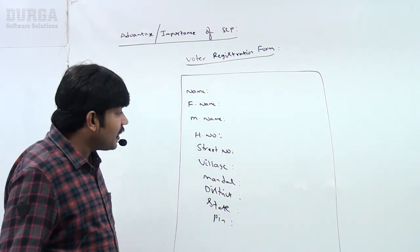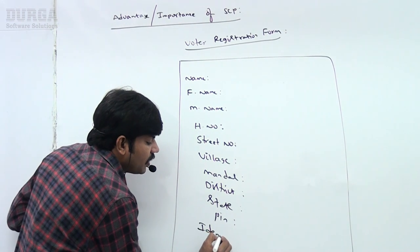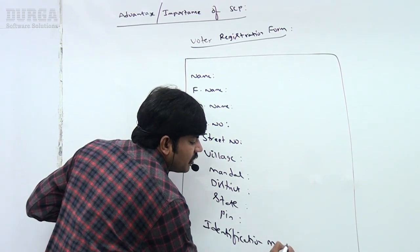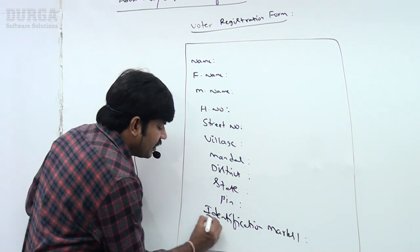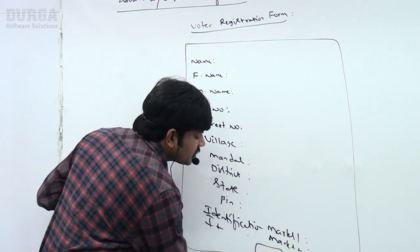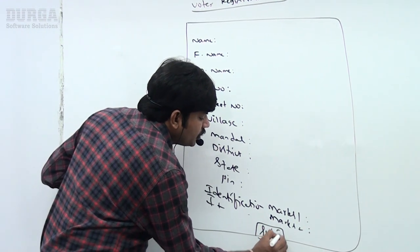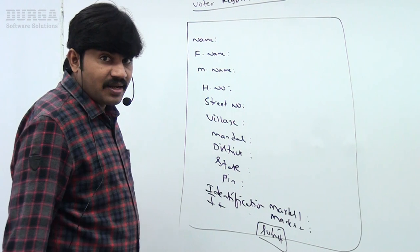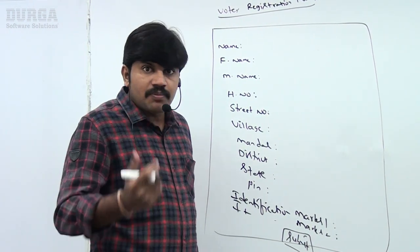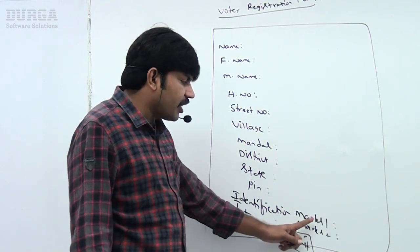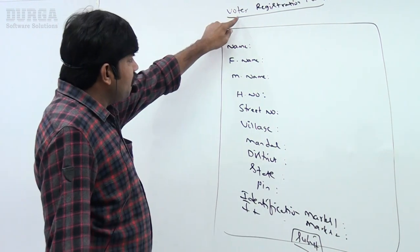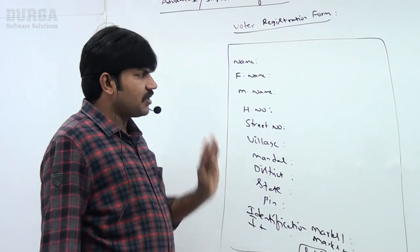Sometimes there may also be Identification Mark 1 and Identification Mark 2 — like a mole on the right-hand side, a mole on the left eyebrow, something like that from your 10th class records. And at last, a Submit button. That is a simple voter registration form.